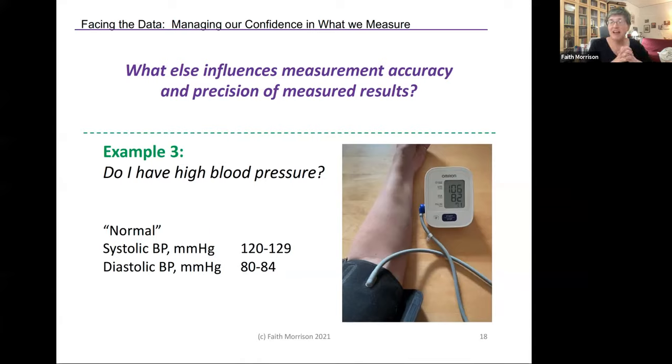So my example for this is blood pressure. I take my blood pressure every day because I have to monitor some aspects of my heart. And I always take a triplicate. I always take three measurements in a row and I'm going to explain why I do that. So here's my third example. Do I have high blood pressure?